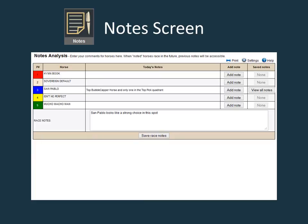The note screen is the spot to view any notes you have entered regarding a horse or the race. Click on the add note button to add any info you want to remember about a horse, and you can also enter race information at the bottom of the page. When you are on any of the other screens, mousing over a horse's name or tapping on a touchscreen device will bring up a convenient link to add a note about a horse. These notes will end up on the notes screen.